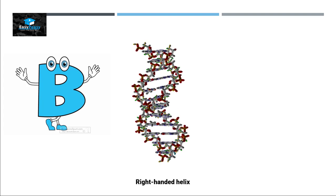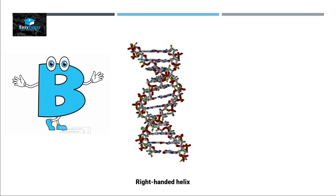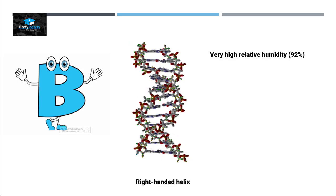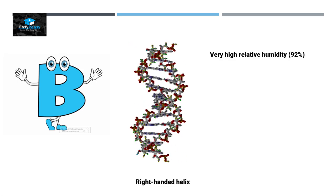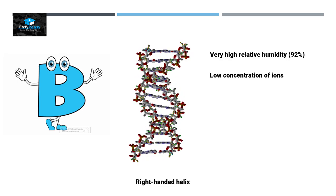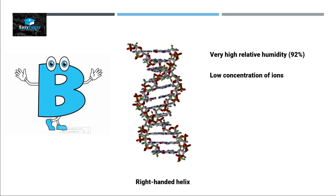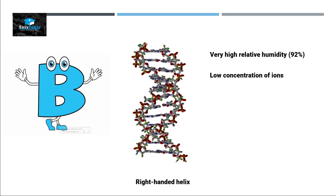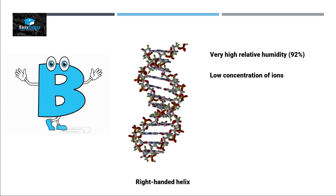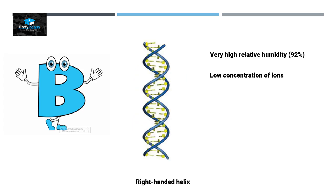B form is a right-handed helix, present in a very humid environment around 92 percent and low concentration of ions. This is the ideal environment of the cell, that's why the most common form of DNA present inside the cell is B form. Each turn contains 10 base pairs in B form. Let's count: one, two, three, four, five, six, seven, eight, nine, and ten.